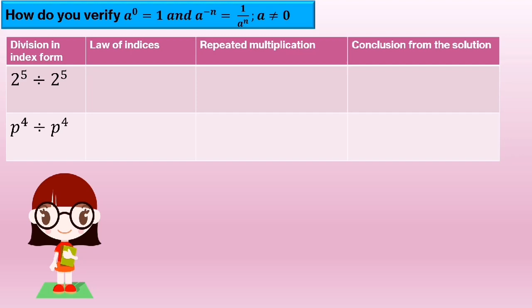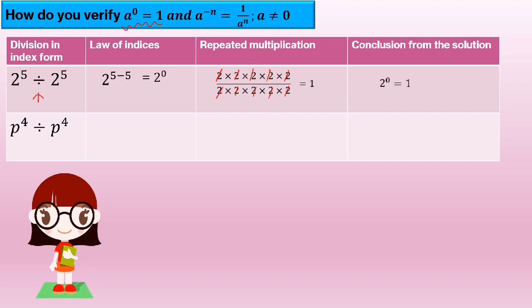For this part, we are going to verify that a to the power of 0 equals 1. We start with the division in index form: 2 to the power of 5 divided by 2 to the power of 5. As you know, in division you subtract the indices, so 2 to the power of 5 minus 5 equals 2 to the power of 0. If we write it as repeated multiplication, we get 2×2×2×2×2 over 2×2×2×2×2, and when you simplify it you obtain 1. So the conclusion: 2 to the power of 0 equals 1.